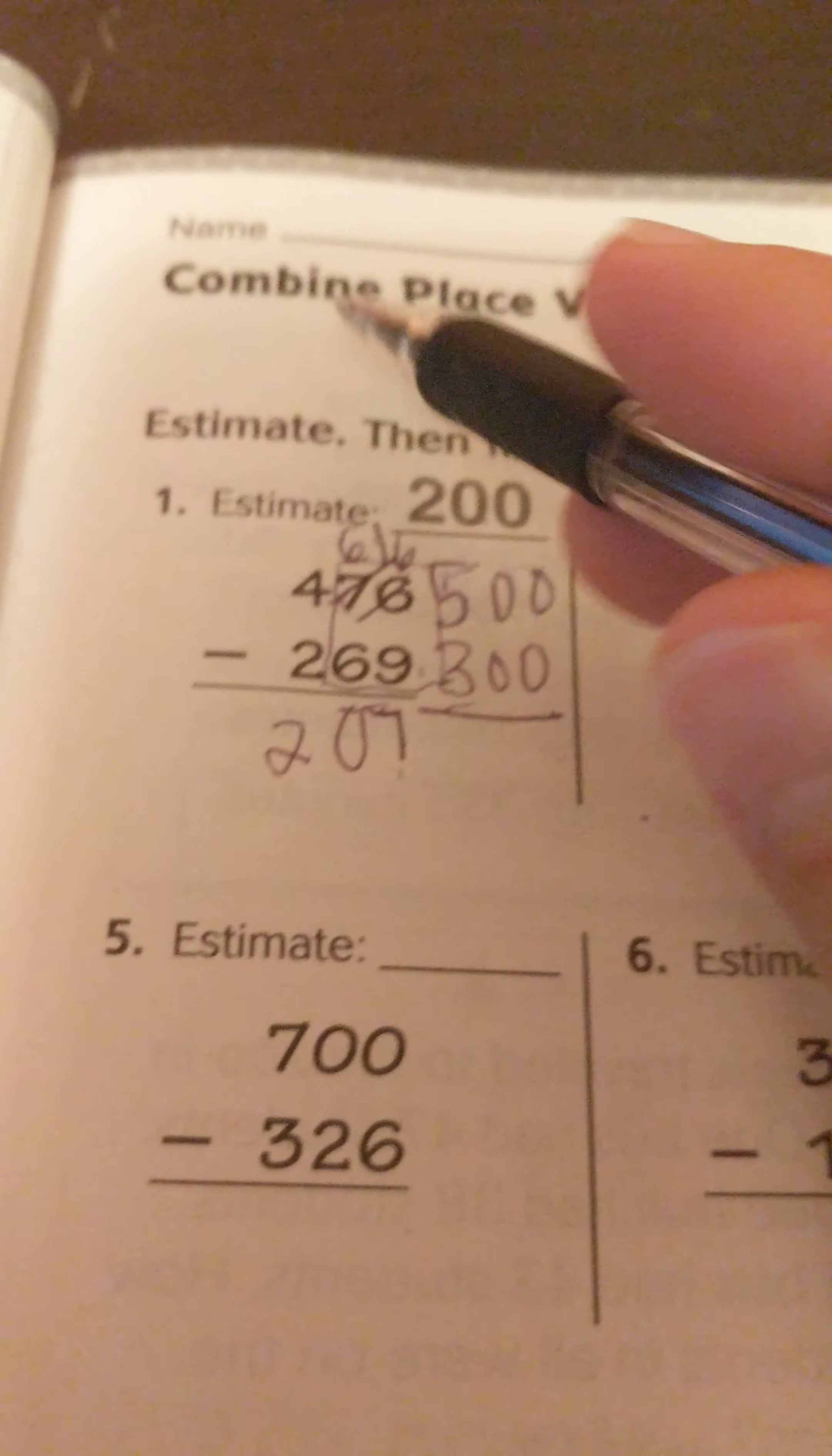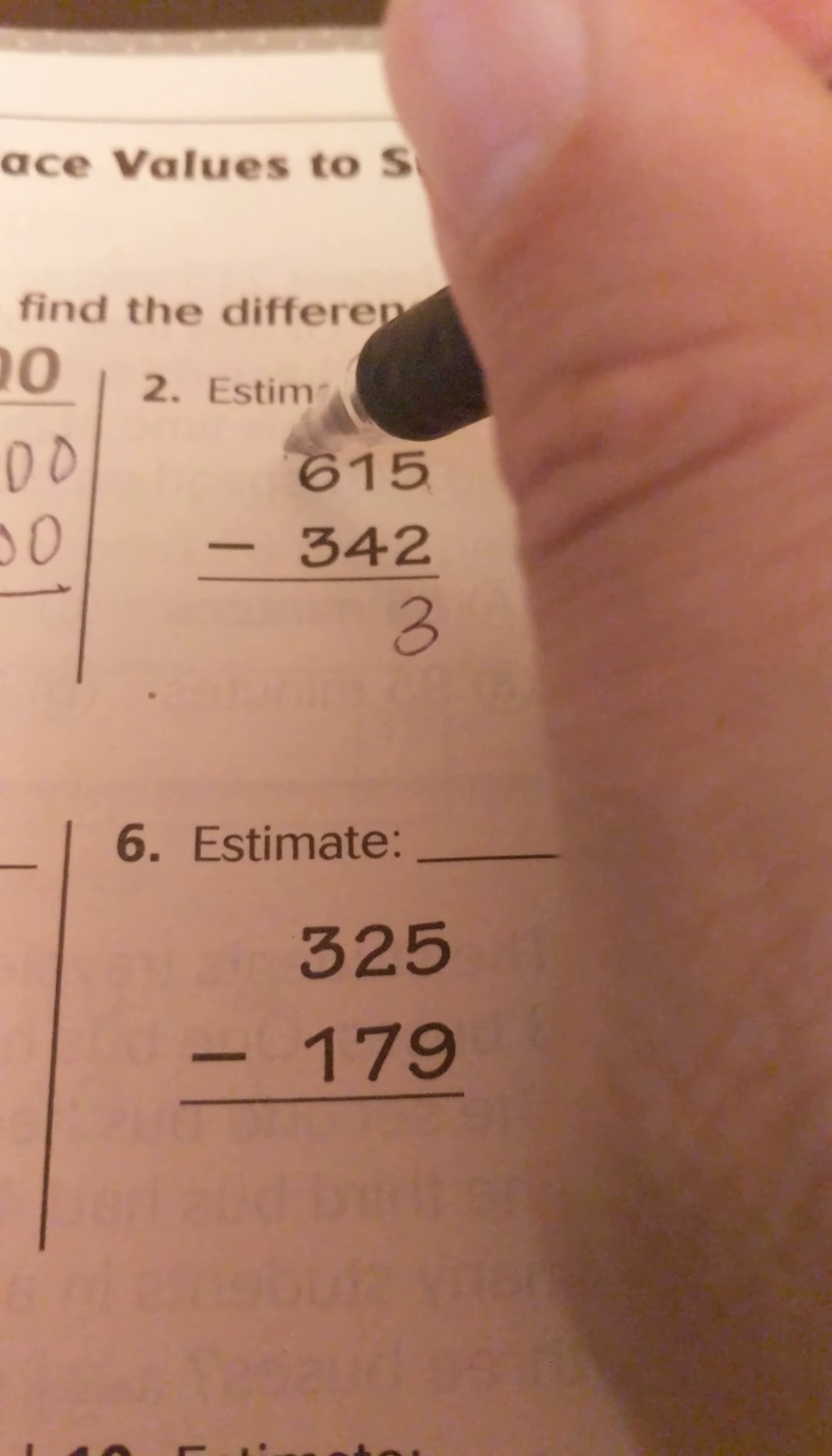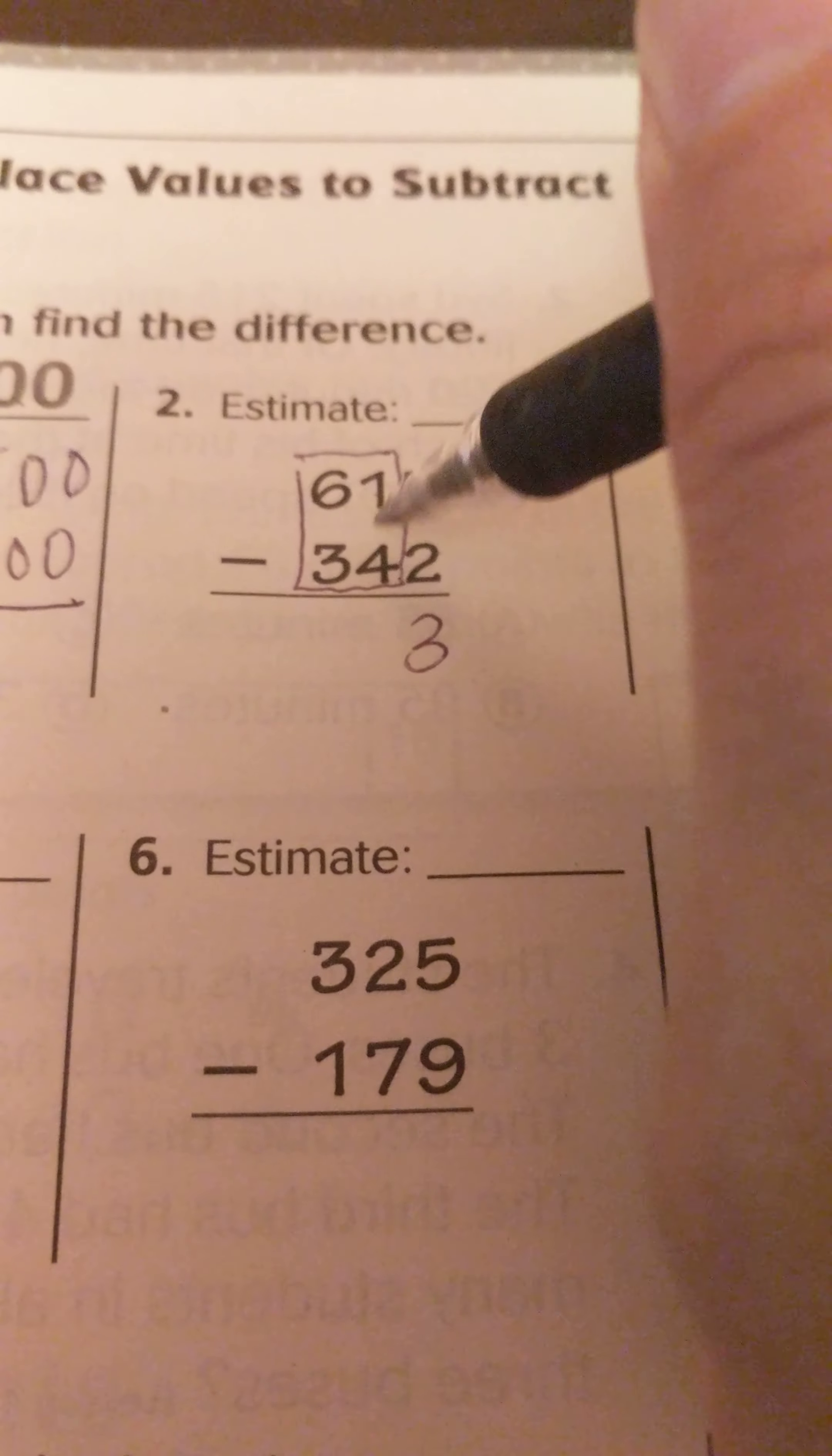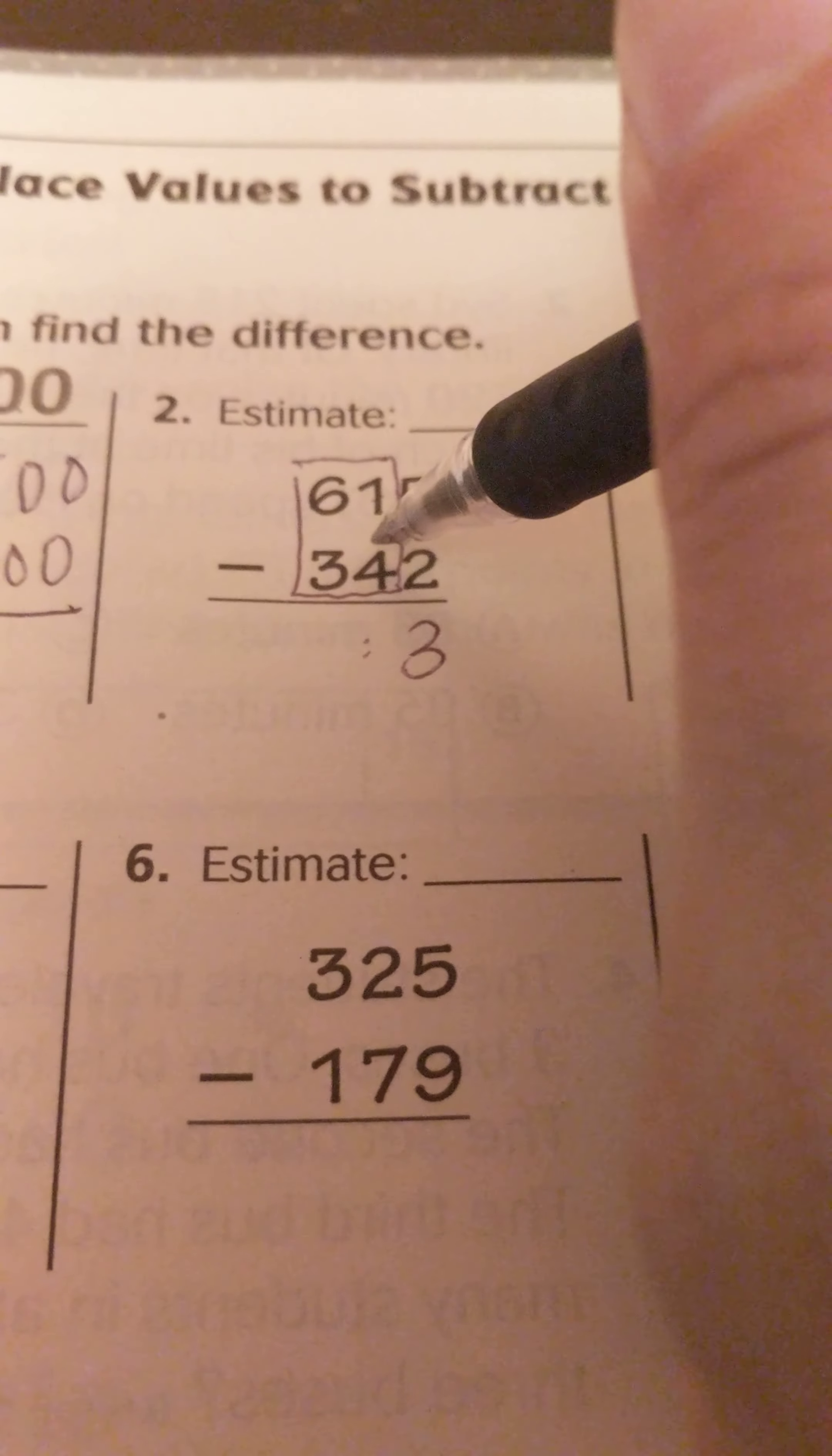Now going back to where the concept of combining place values. If you look at, they want us to look at 61 minus 34. Now if I think about this as like 64 minus 34, I know that would be 30. And if I counted back 3 that would be 27.